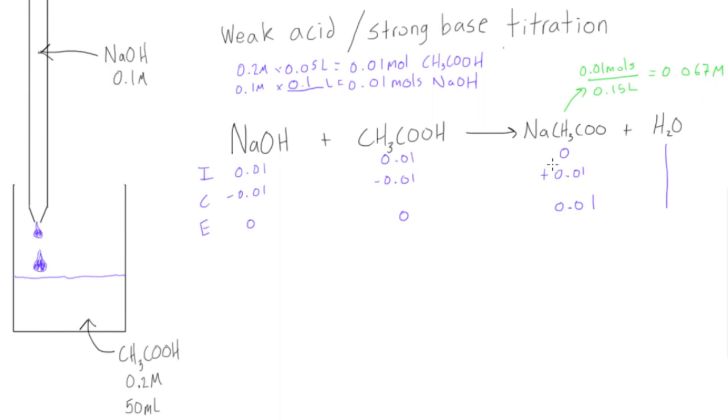This is all we have in our beaker now, just this solution that's water and it's a 0.067 molar NaCH3COO. So what we have to do now is another chemical equation where it's going to be dissociating in water. We'll have NaCH3COO plus water H2O and we will be getting NaCH3COOH plus OH minus. This would be equilibrium.